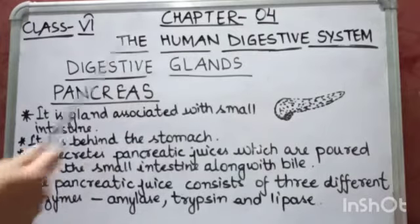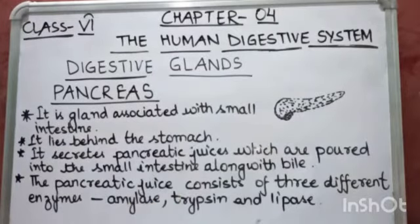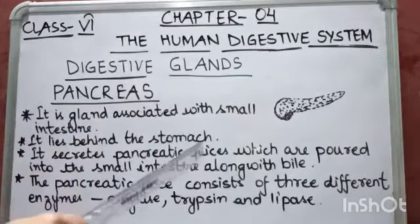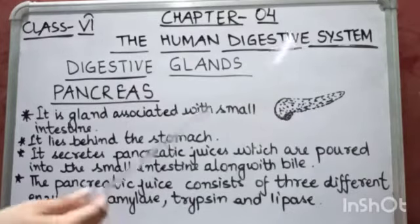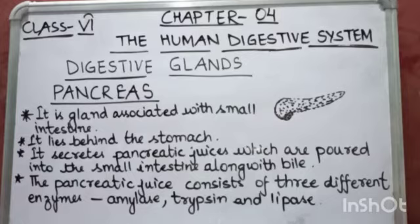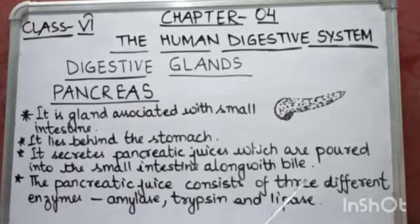The third and last digestive gland is the pancreas. As you can see its structure, the pancreas is a gland associated with the small intestine and it lies behind the stomach. It secretes pancreatic juices, which are poured into the small intestine along with bile, and these juices help in the digestion of food. Pancreatic juice consists of three enzymes: amylase, which digests starch into glucose; trypsin, which is a protein-digesting enzyme that breaks protein into amino acids; and lipase, which is a fat-digesting enzyme that converts fats into fatty acids and glycerol.